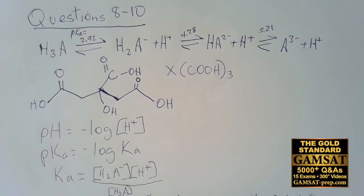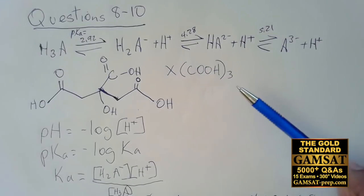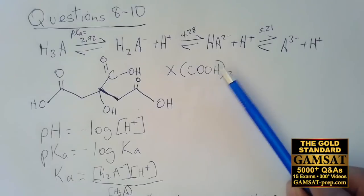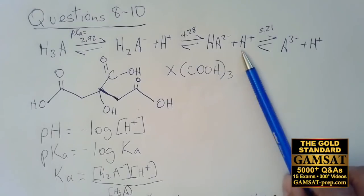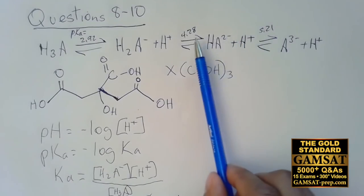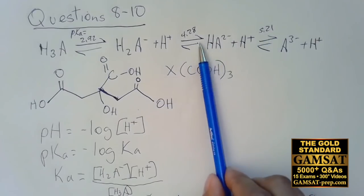Now we have a little context and will prove some of what I've said. The first question asks: what's the predominant species in a solution of citric acid at pH 5? I'm not concerned with the concentration — I'm concerned with the pH, because pH 5 is between those two pKa values.